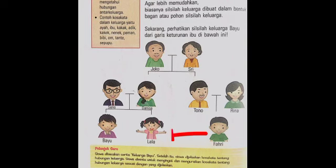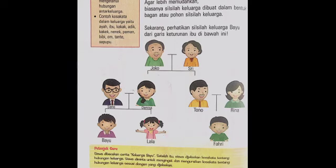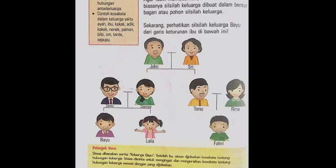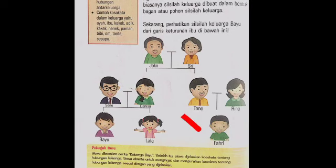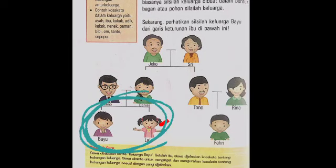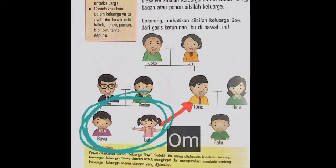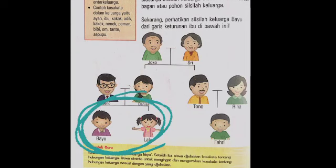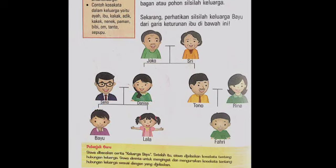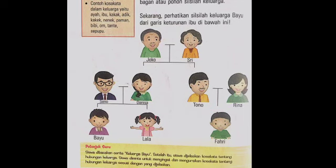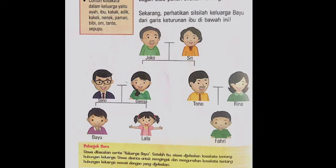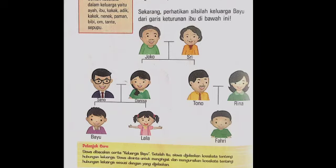Sedangkan Tono menikah dengan Rina dan mempunyai seorang anak bernama Fahri. Fahri adalah sepupu Bayu dan Lala. Bayu, Lala, dan Fahri adalah cucu dari Pak Joko dan Bu Sri. Fahri memanggil ibu Bayu dengan sebutan Bibi, sedangkan Bayu dan Lala memanggil ayah Fahri dengan sebutan Om. Bayu serta Lala memanggil ibu Fahri dengan sebutan Tante. Pak Tono dan Ibu Rina adalah Om dan Tante dari Bayu dan Lala.